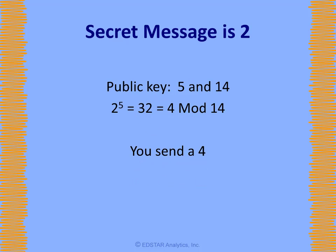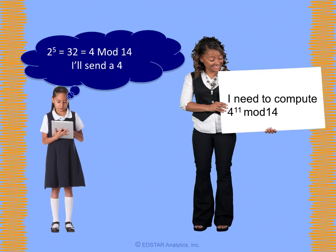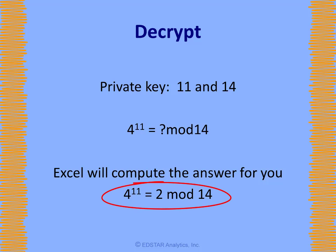Let's say you are a scout and you are to send a 2 if you see the enemy coming by sea. Your public key is 5 and 14 — 5 is the number that has an inverse mod T, and 14 is the mod we are using. Knowing these numbers will not allow somebody to decrypt your code if they intercept it. Raise your number to the 5th power and compute mod 14. You send a 4. The villain who intercepts that cannot reverse engineer that 4 to get to the 2, because infinitely many numbers equal 4 mod 14. The private key was 11 and 14. If we raise 4 to the 11th power and compute mod 14 — Excel has a mod function and makes this easy — it turns out that 4 to the 11th power is 2 mod 14. So now you know that the message was 2 and therefore the enemy is coming by sea.